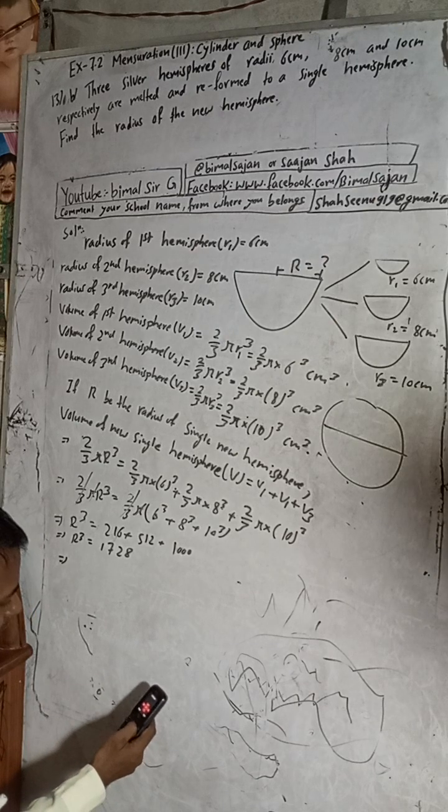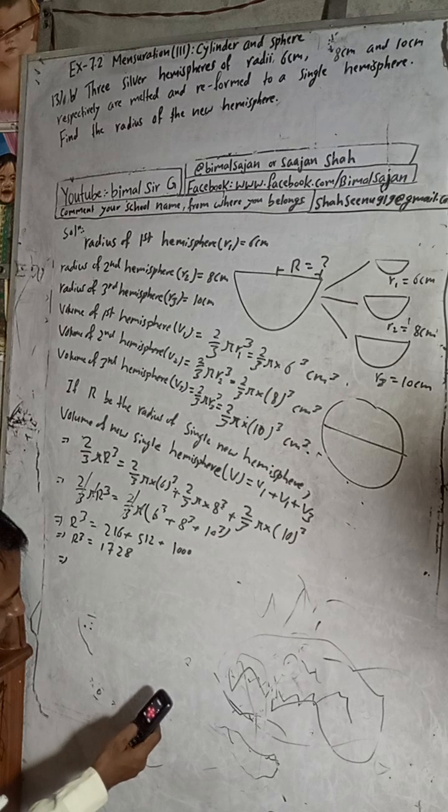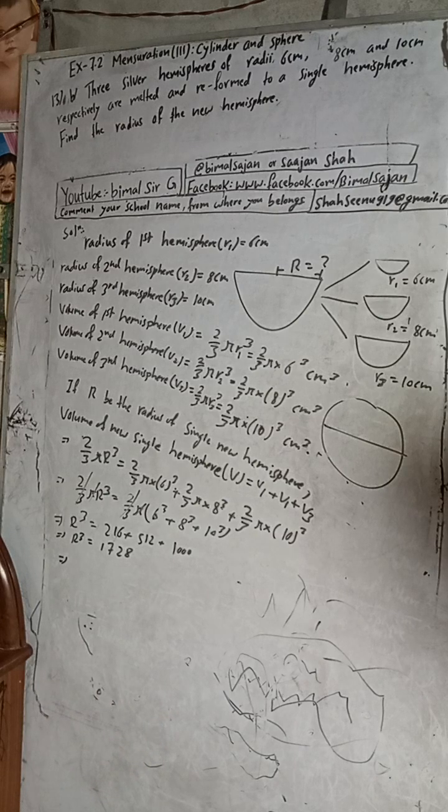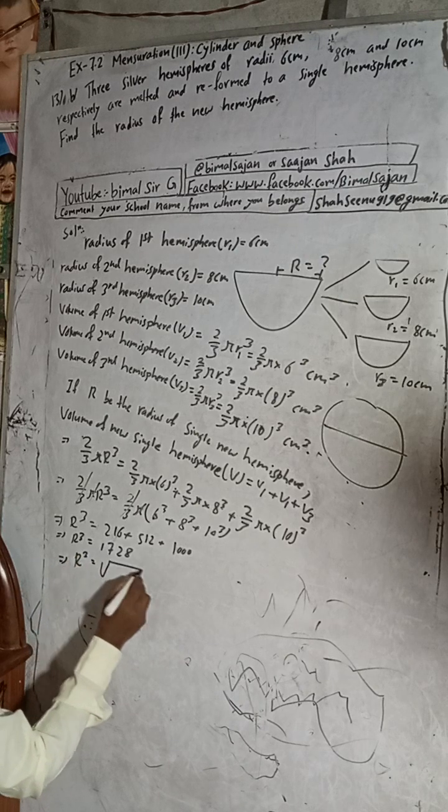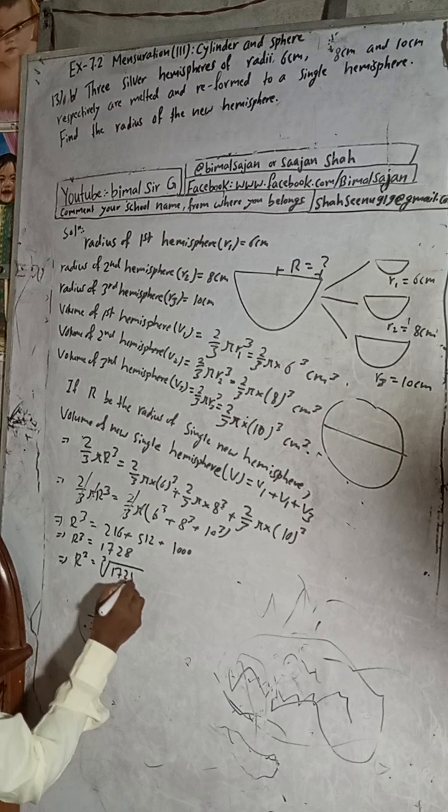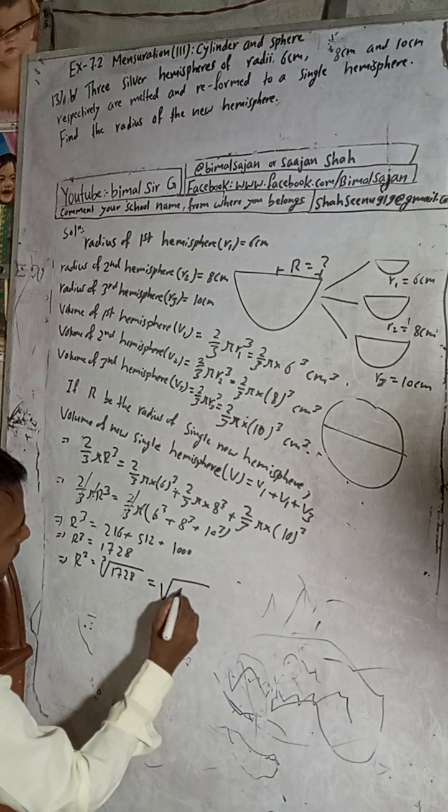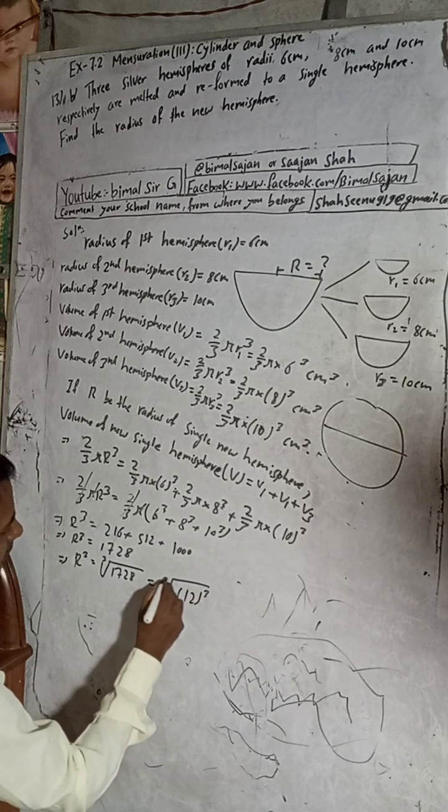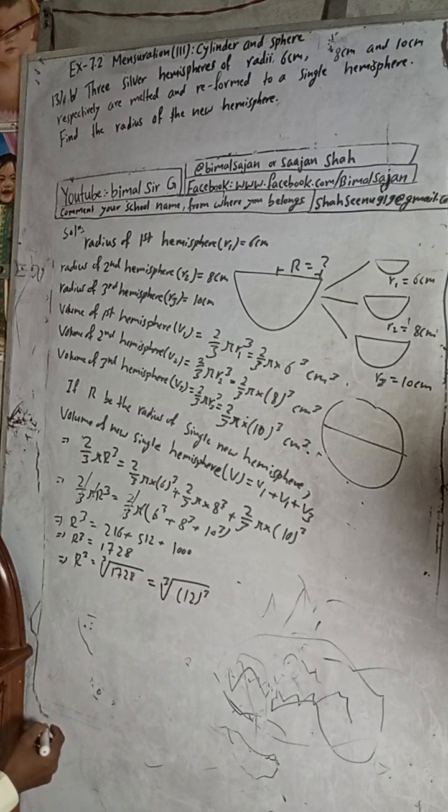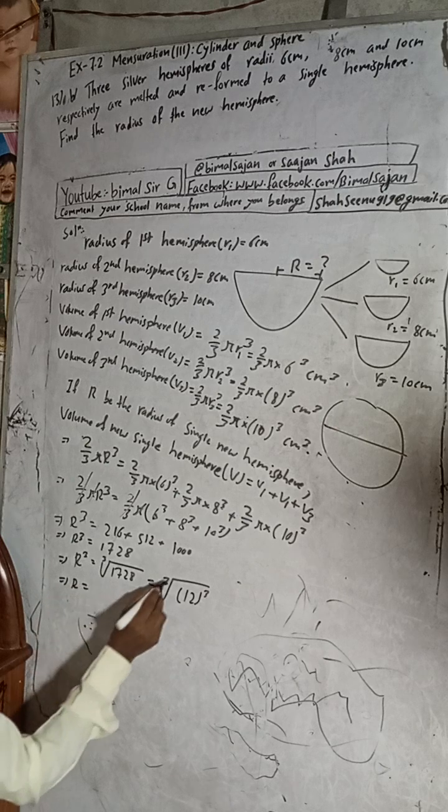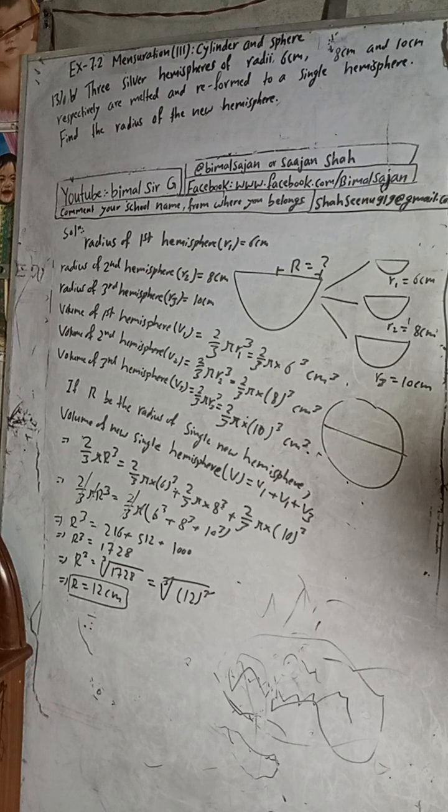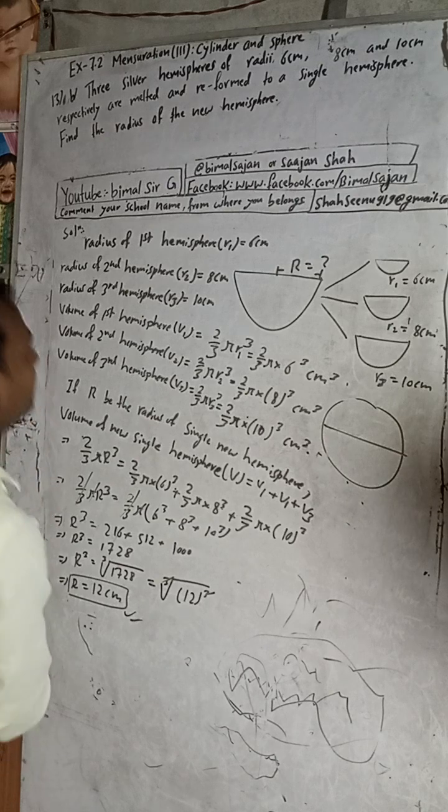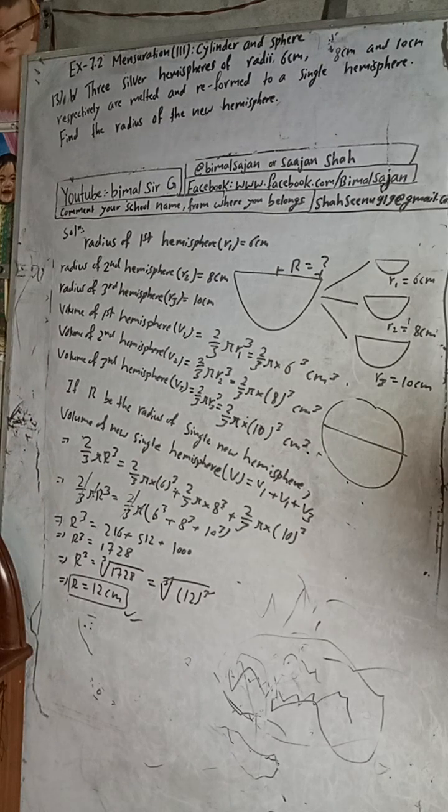R cube is equal to cube root of 1728. 12 power 3 is equal to 1728. So this implies R is equal to 12 cm. Therefore, the radius of new hemisphere is equal to 12 cm. This is our answer.